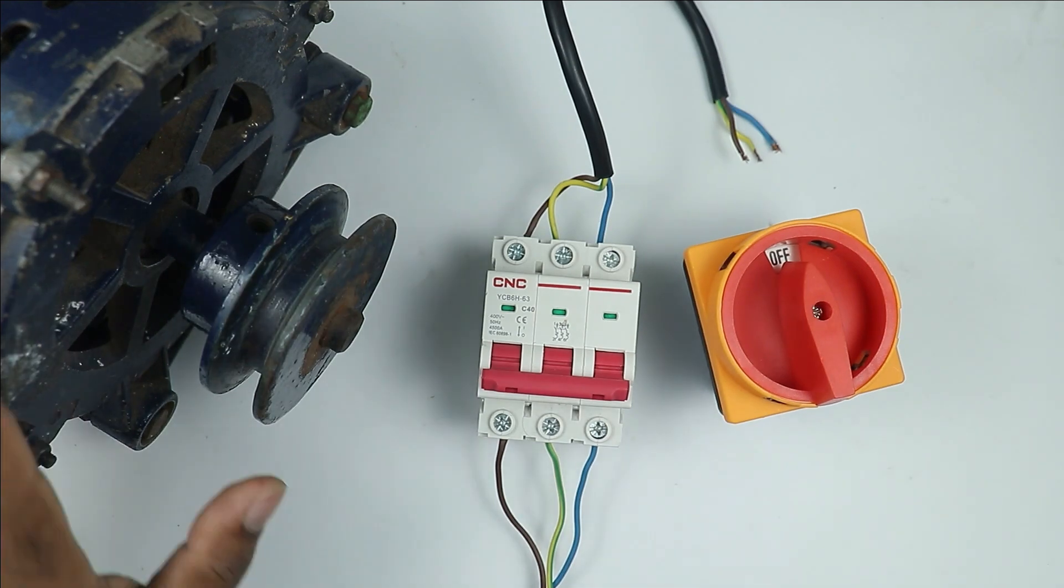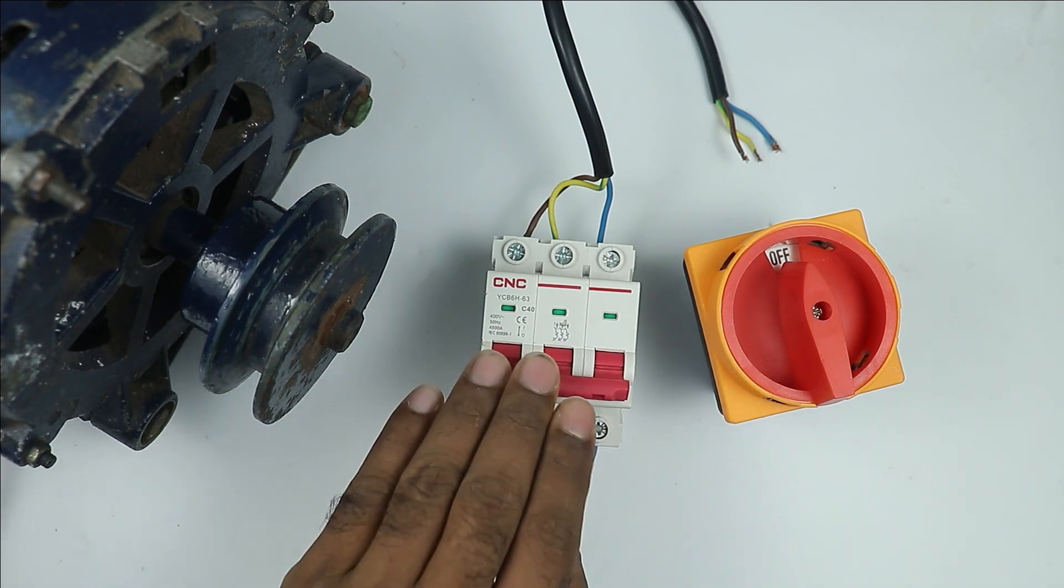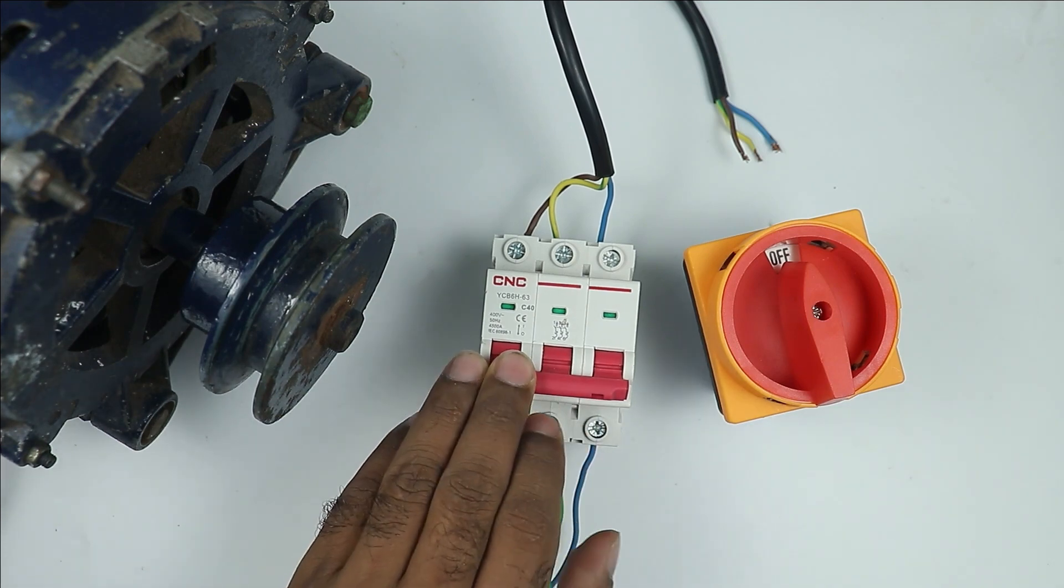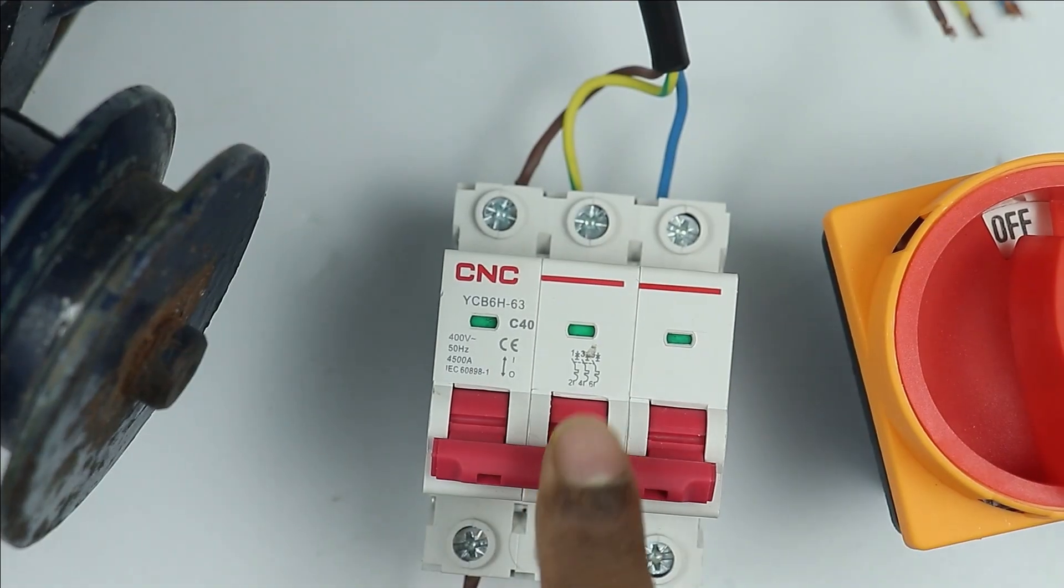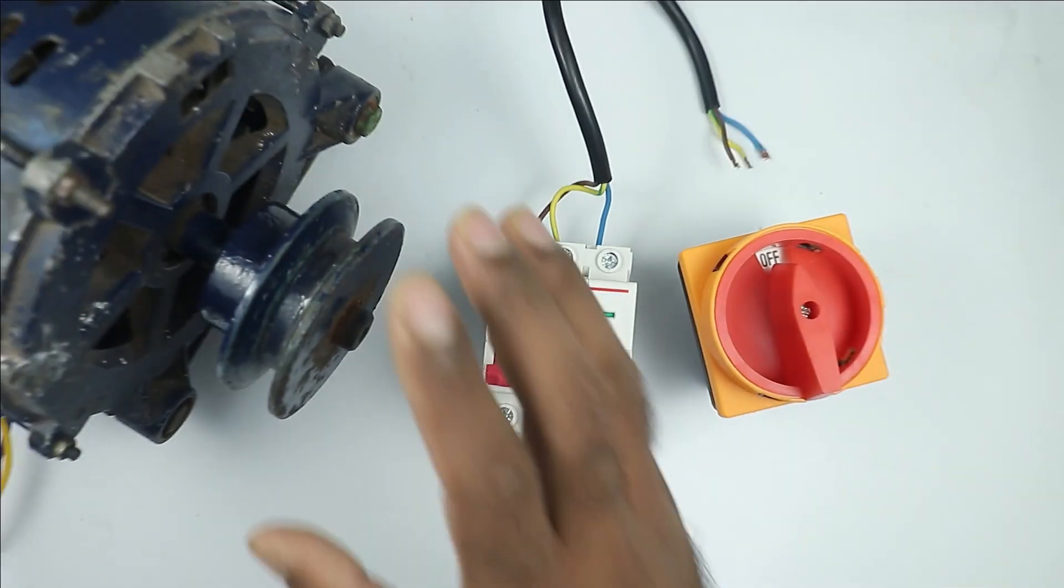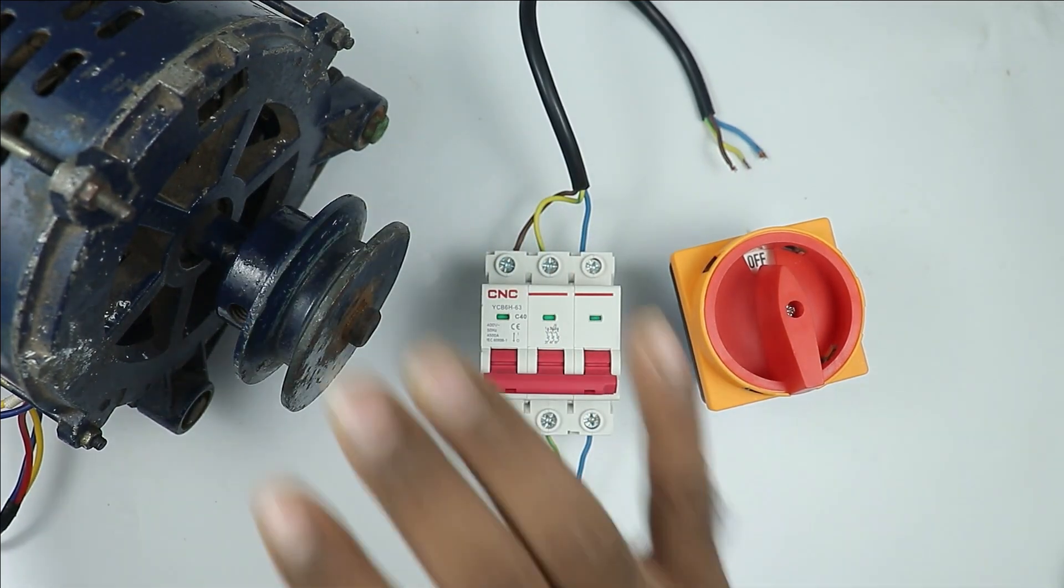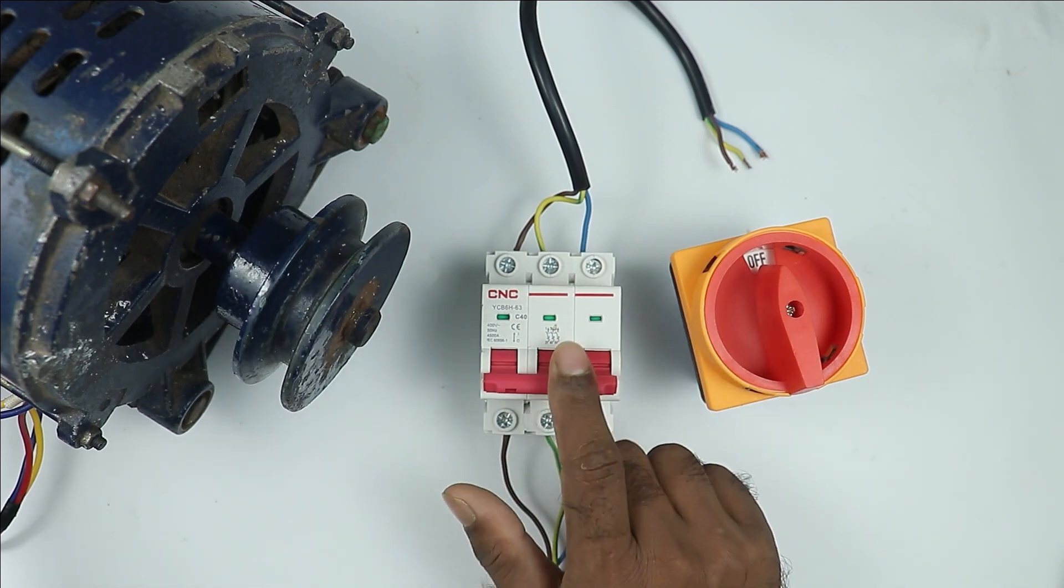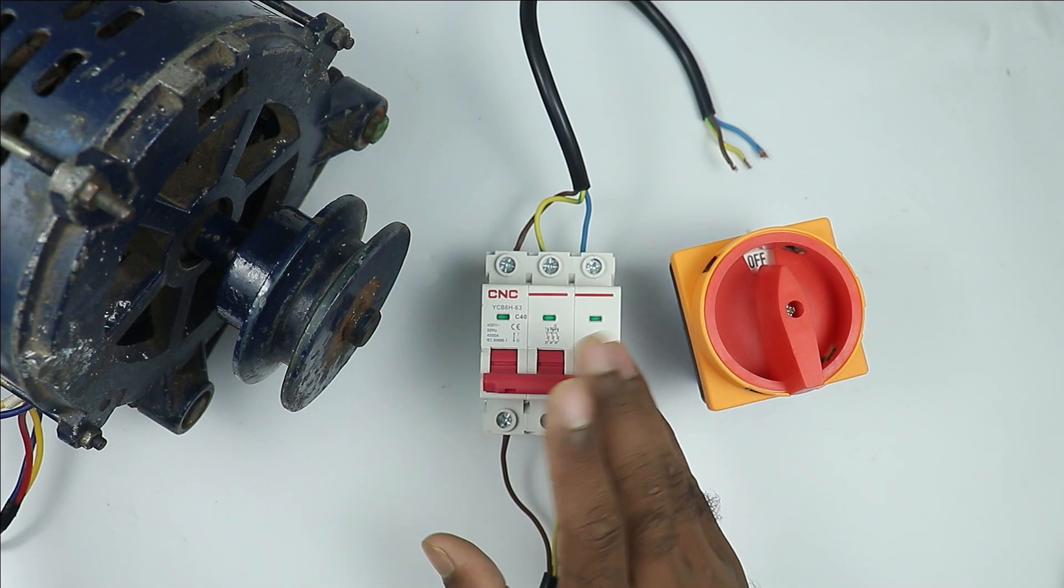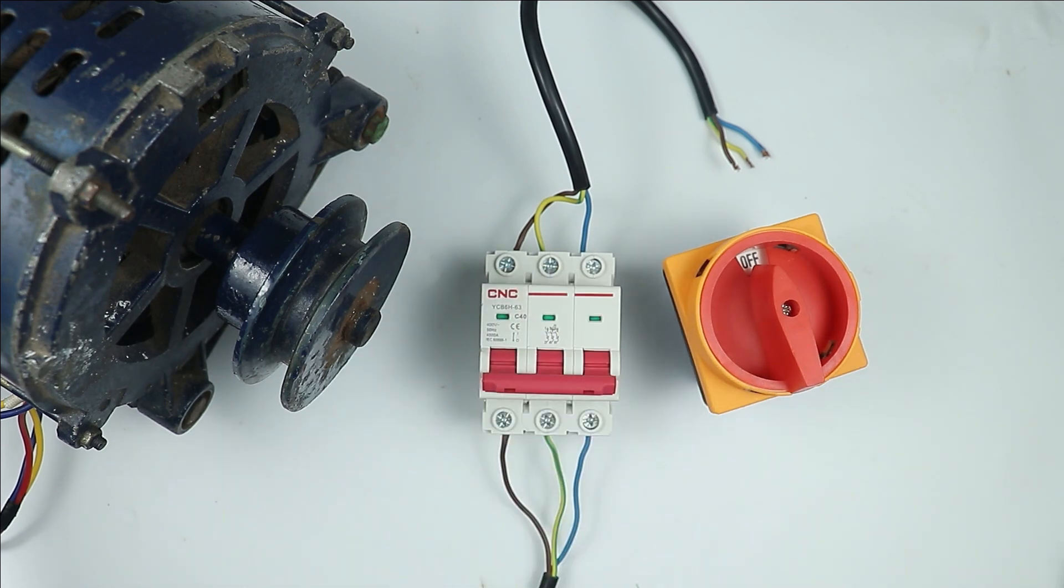If you use MCB, then your motor will be protected from overload and short circuit. But one thing you must keep in mind: the current rating of MCB must be little more than motor. You can see here, the MCB I have has a current rating of 40A and the motor is just 3 to 4A. So just for 3 to 4A, do not use 40A MCB. I used this here just to show you how it works. So I connected all three wires at the output terminals of MCB.